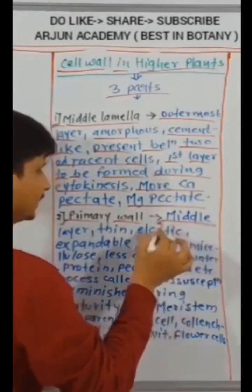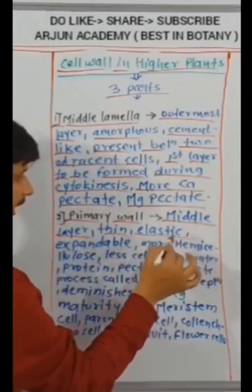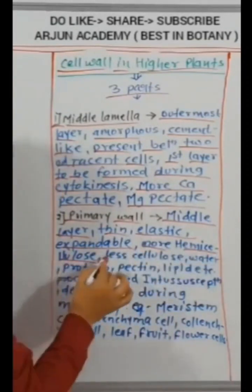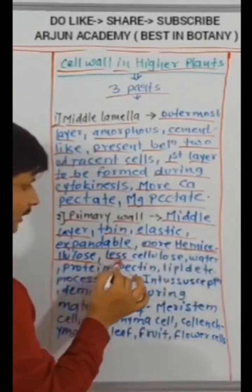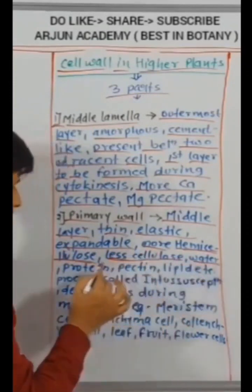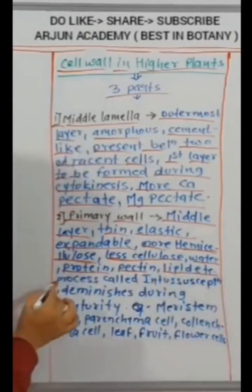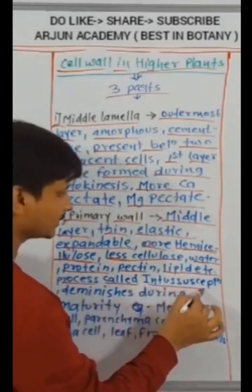More calcium-pectate plus magnesium-pectate. Primary wall: middle layer, thin, elastic, expandable. More cellulose. Less hemicellulose. More hemicellulose. Less cellulose. Water, protein, pectin, lipid, etc.